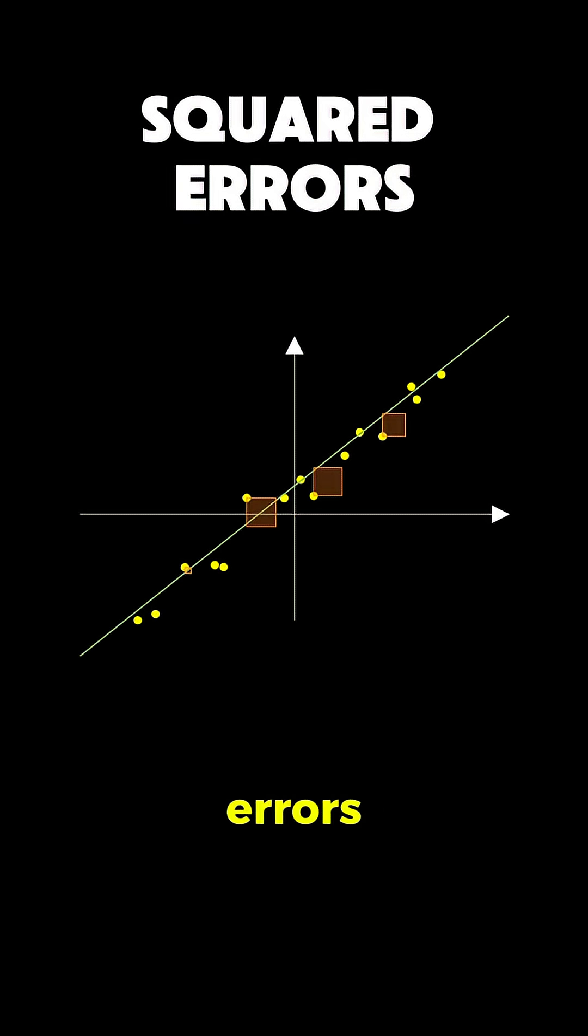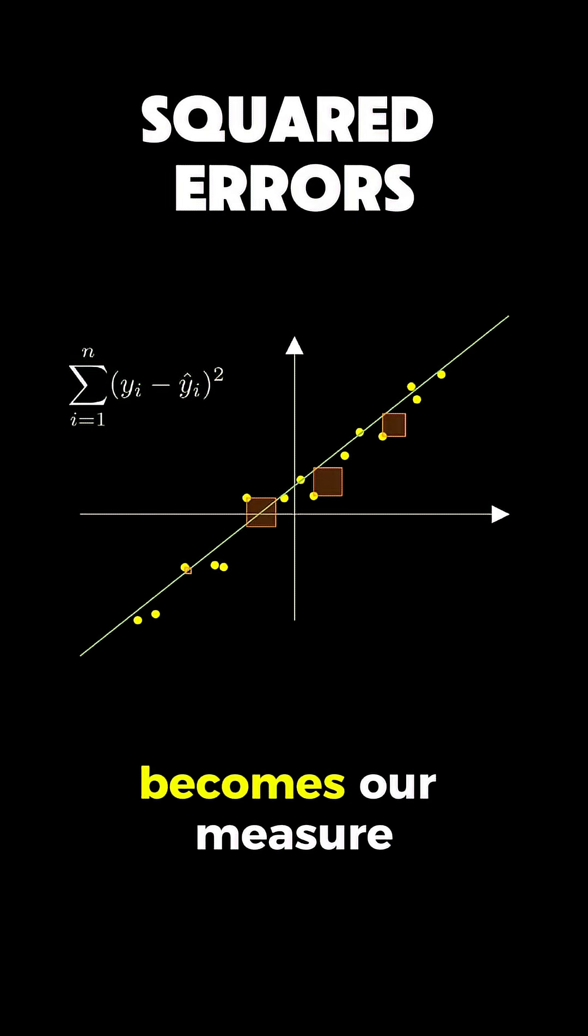And this sum of squared errors, or SSE, equals the sum from i equals 1 to n of (y sub i minus y hat sub i) squared, becomes our measure of how wrong our line is.